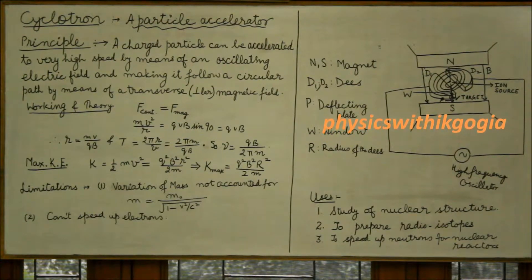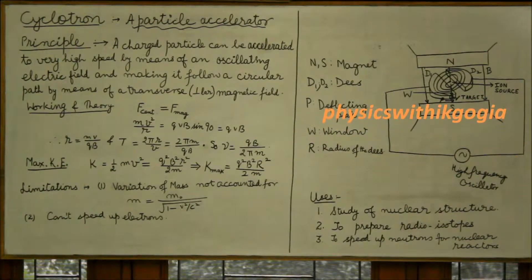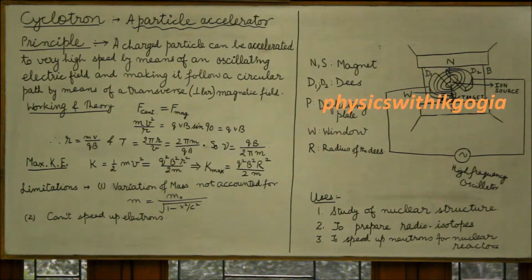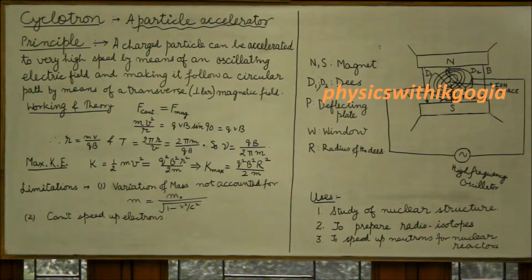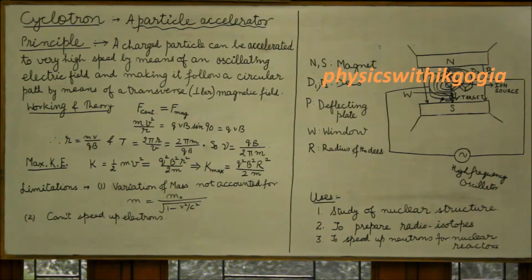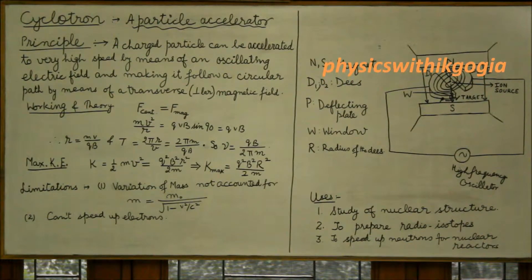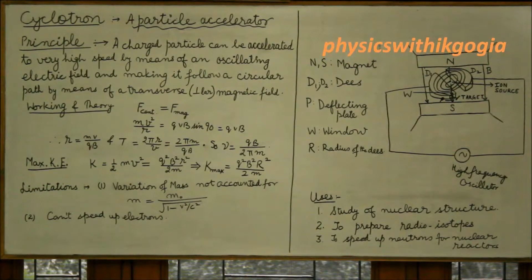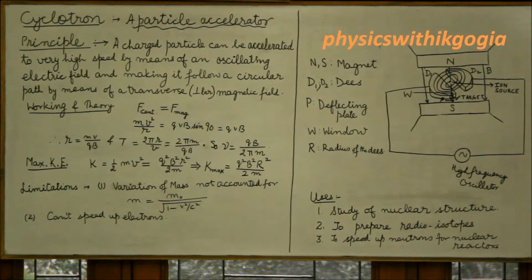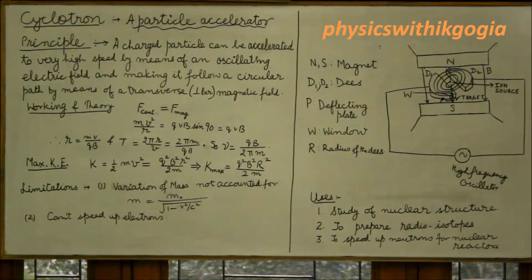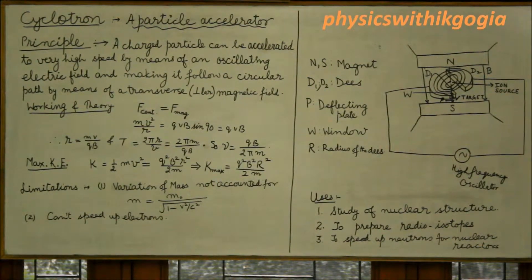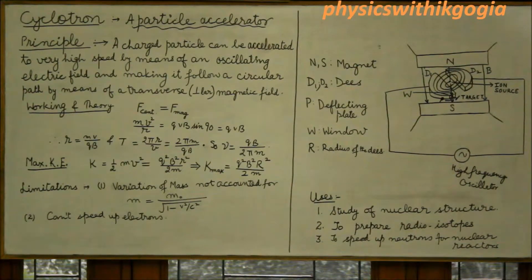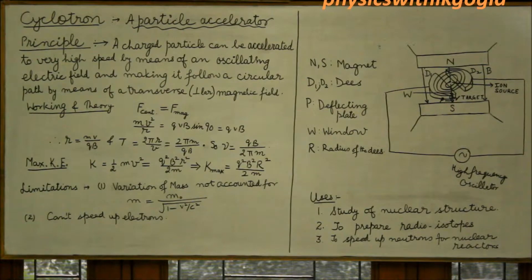In the previous video on the motion of a charged particle in a magnetic field, we have already studied that if a charged particle is moving normal to the direction of the magnetic field, it follows a circular path. We obtained expressions for the radius, the time period, and the frequency — that is, the number of revolutions the particle performs in the magnetic field. You will do well to revisit that video before you try to understand the cyclotron.